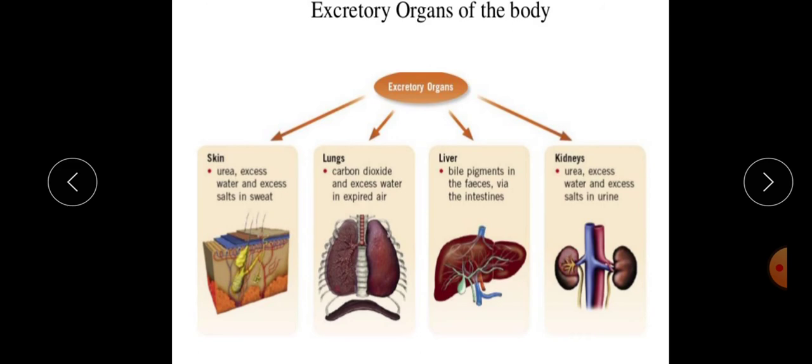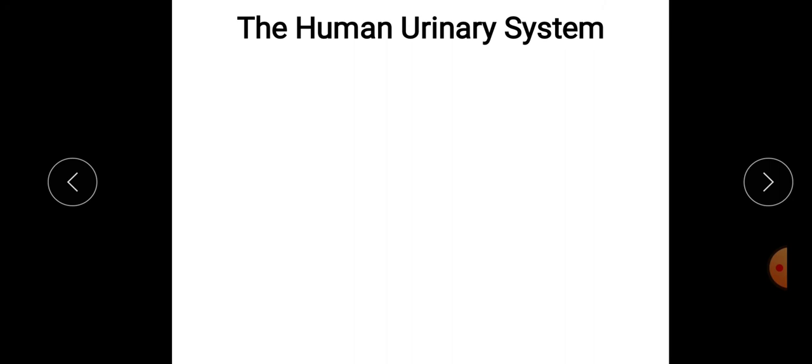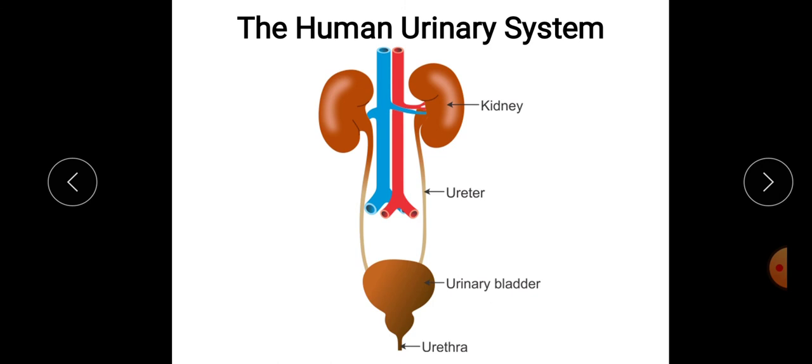Now, you have understood various excretory organs of the human body. So let us discuss the structure of the human urinary system, which is also known as the human excretory system. It consists of a pair of bean-shaped kidneys, a pair of tube-like structures arising from each kidney called ureters, a sac-like structure called urinary bladder and a small muscular tube called urethra.